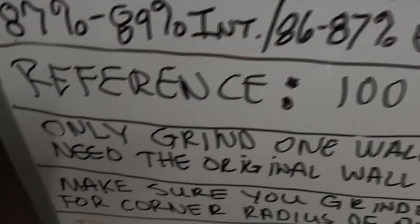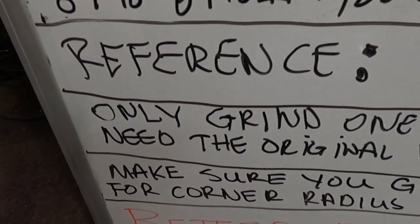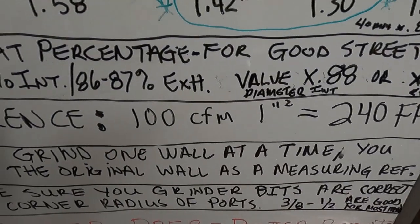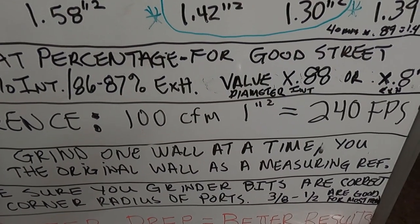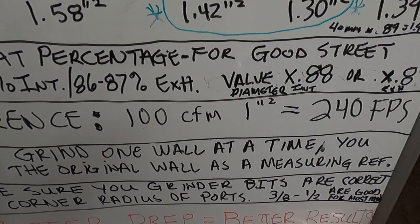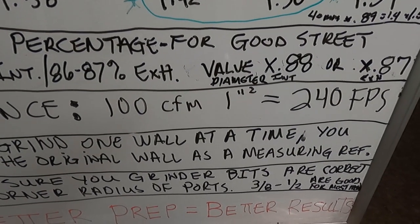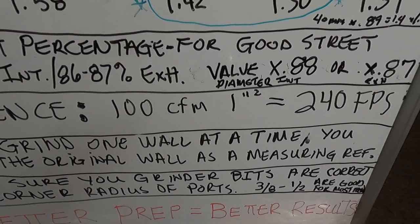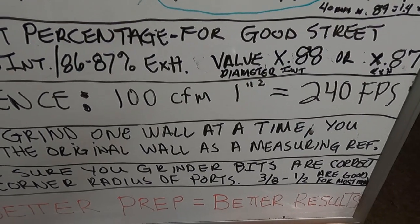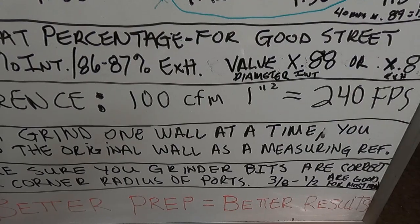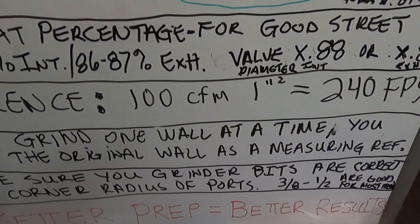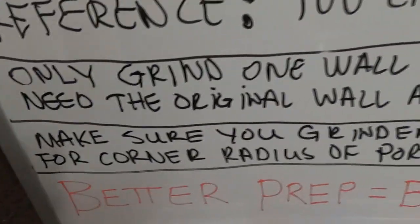Another basic rule: as you're porting your head, only grind on one wall at a time. That's good because you want a reference for how much you're taking off — if one side stays original you can really measure how much you've removed. Some guys go in and try to make everything look pretty so they feel like they're getting somewhere, but then it's hard to know how much you've taken off of any one wall because all the walls have material removed.